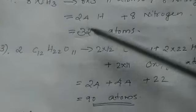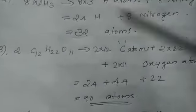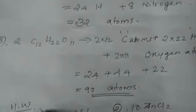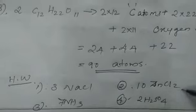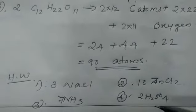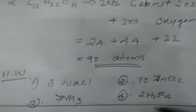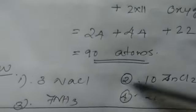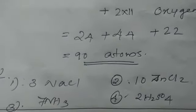Is it clear? So this is the way to find out the total number of atoms in each molecule. Now you will have homework: 3 NaCl, 10 zinc chloride, 7 NH3, and 2 H2SO4. You have to find out the total number of atoms for these molecules as homework. Okay, thank you.